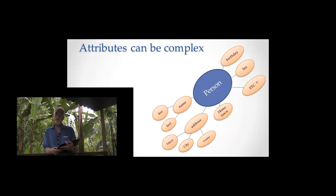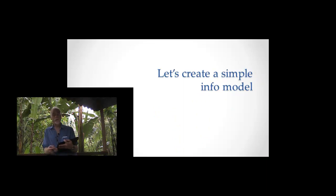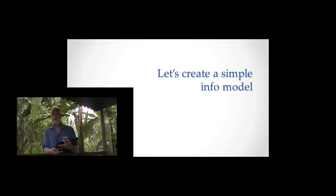The ideas so far are that there are information types, those types have attributes, and we can begin to unpack that. What we're going to do in the coming example is unpack that for a very simple site. We'll choose one simple site and go backwards using all the user interface forms and displays to figure out what the information model might be behind that site. We're not going to do Facebook right off the bat — we're going to start with something simple where I can actually get through most of it in the time I have.